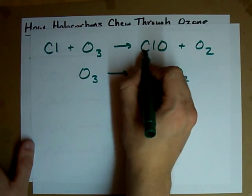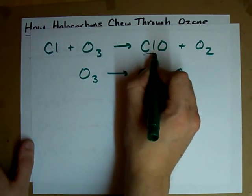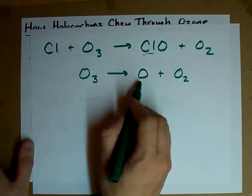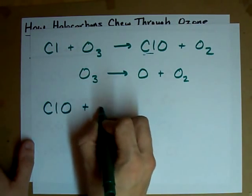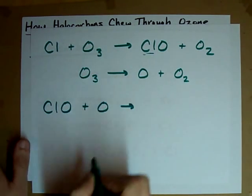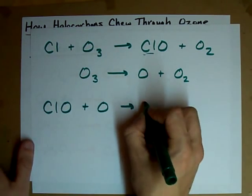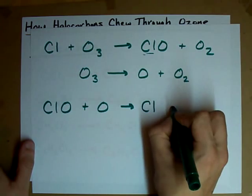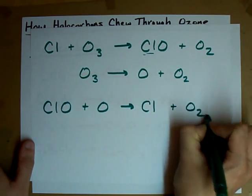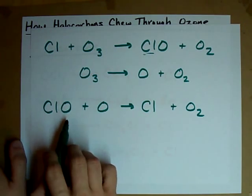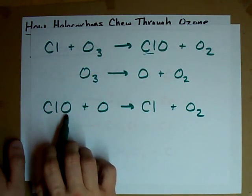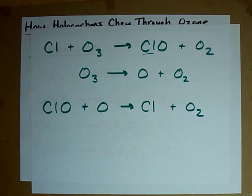And what happens is that this ClO molecule can react with a free O. ClO plus O. When those two get together, they react to make just a chlorine and an O2 molecule. So, you'll notice that this free oxygen steals an oxygen away from the ClO molecule.